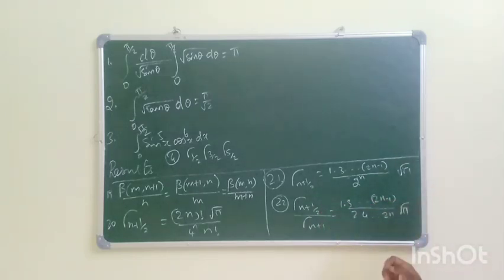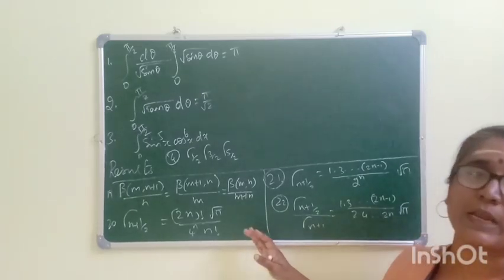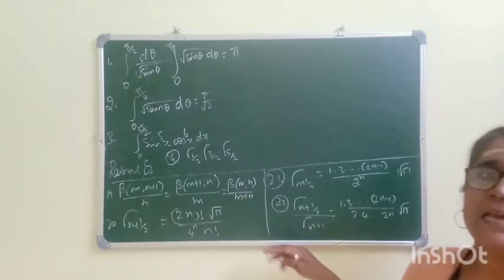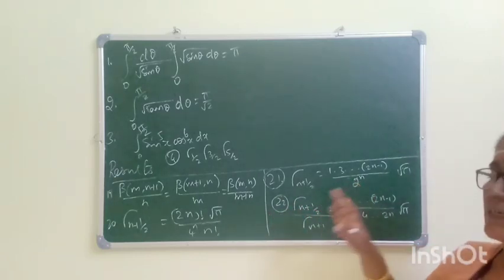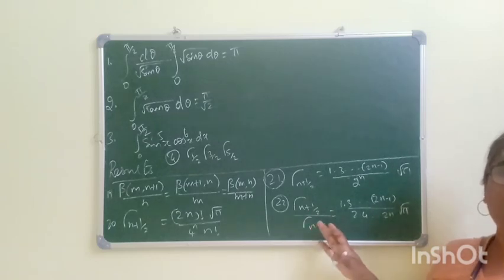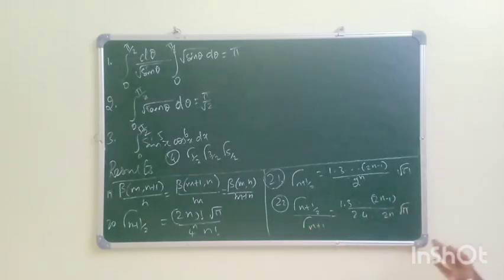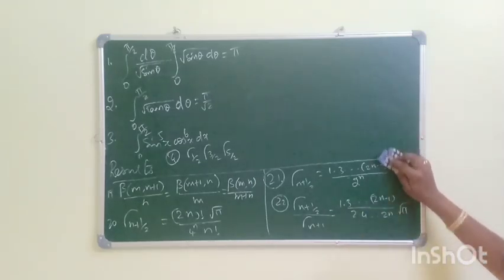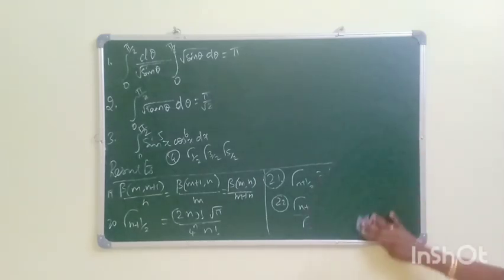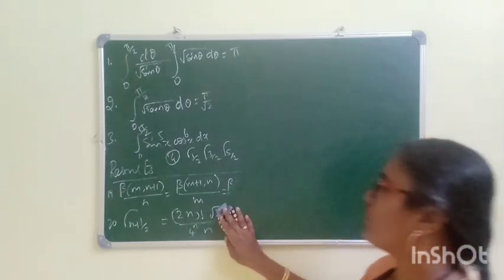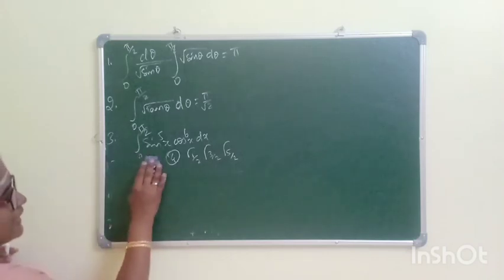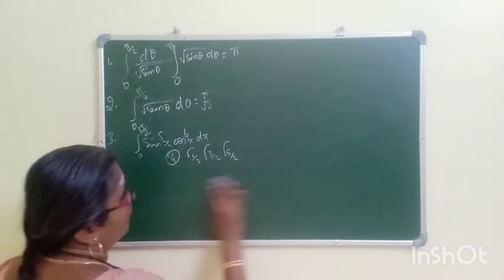In the beta gamma function, you can get 16 results. You can get 4 results, 22 results, and further problems. You can get 1 or 2 videos on beta gamma functions. You can complete 40% of the channel's portion and watch the continuous channel.